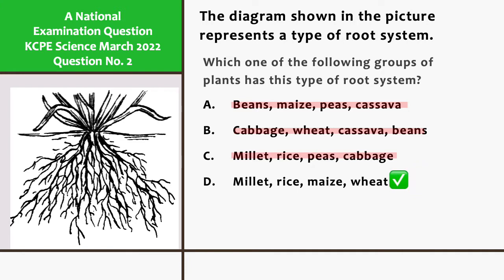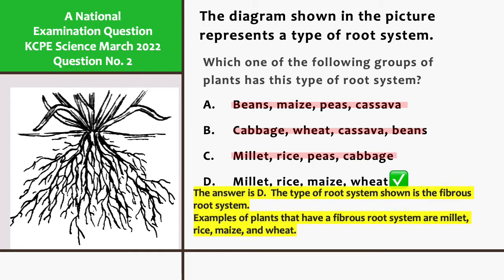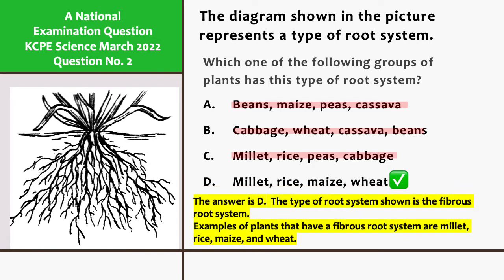The answer is D. The type of root system shown is the fibrous root system. Examples of plants that have a fibrous root system are millet, rice, maize, and wheat.